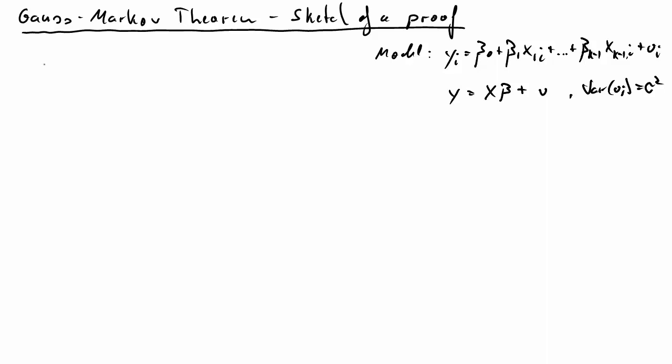In matrix form, of course, this reads much easier. And the variance of the error term is sigma squared. It's homoscedastic, so a constant variance.